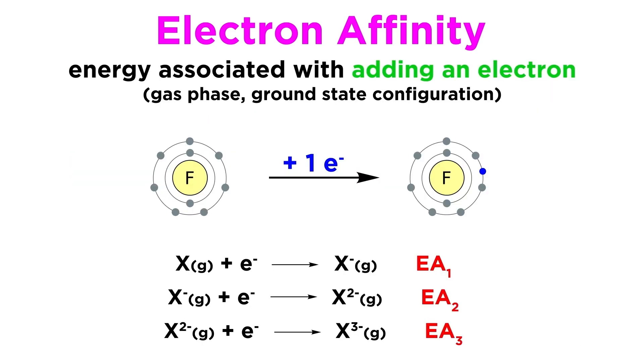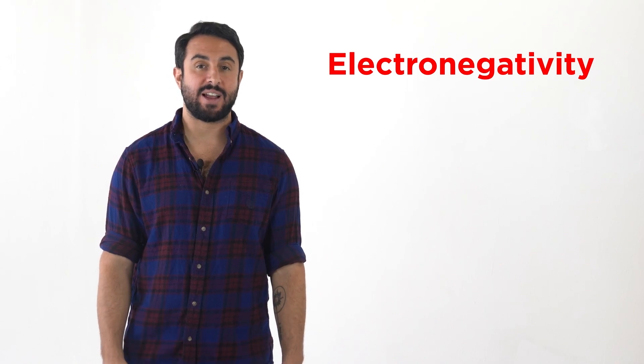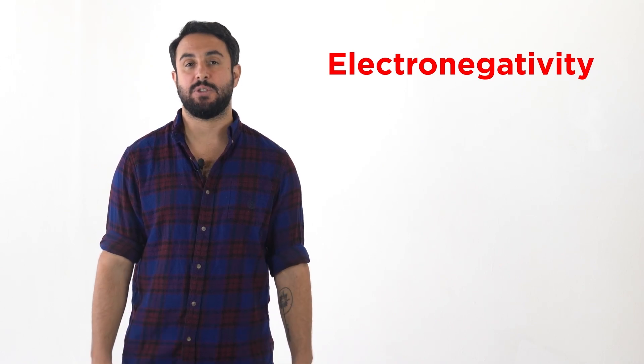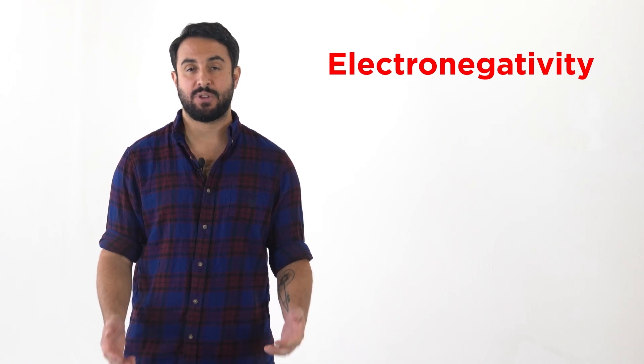There can also be successive electron affinities just like there are ionization energies, which we measure as we form the 2- ion, the 3- ion, and so forth. There is one more important periodic trend, and that is electronegativity, but we will save that one for later, as it will make the most sense in the context of the formation of chemical bonds.